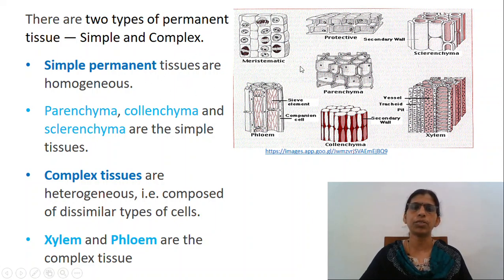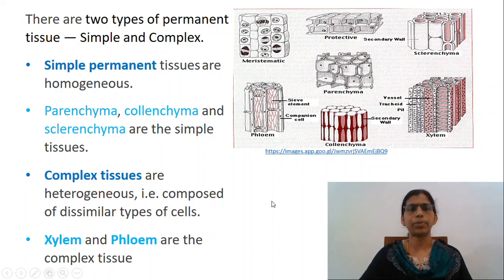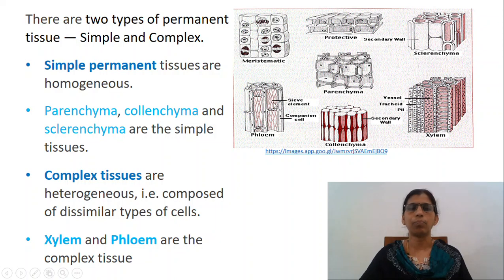Simple permanent tissues are homogenous, that is they are composed of one type of cells only, which have similar morphological structure and perform the same function. Parenchyma, colenchyma and sclerenchyma are the examples of simple tissues. Complex tissues are heterogeneous, that is they are composed of dissimilar types of cells which have different morphological structures. Xylem and phloem are the complex tissues through which upward conduction of water and downward translocation of solutes takes place.